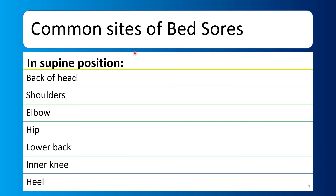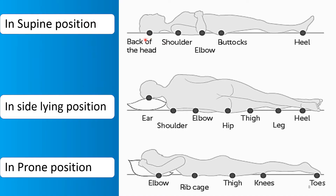Next are the common sites of bed sores. In supine position — lying on the back — bed sores can develop at the back of the head, shoulders, elbows, hips, buttocks, sacrum, inner knees, and heels. In lateral or side-lying position, pressure points include the ears, shoulders, elbow, hip, thigh, legs, and heels.